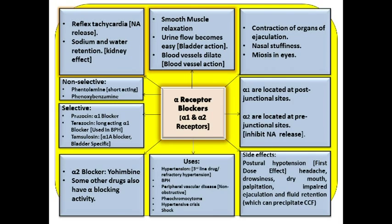Alpha blockers can also be used in clonidine withdrawal. The last use is shock — not as a first-line agent, but in shock, the periphery gets constricted. Vasodilation due to alpha blockers can help perfuse the periphery, shift fluid from the pulmonary segment to systemic circulation, and bring fluid from the extravascular compartment into the intravascular compartment, making it a supportive line of management in shock.